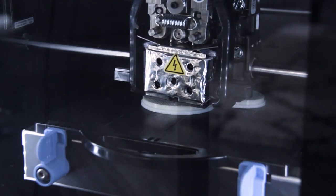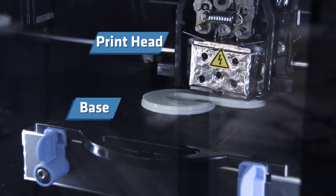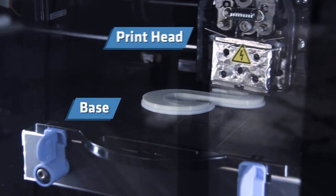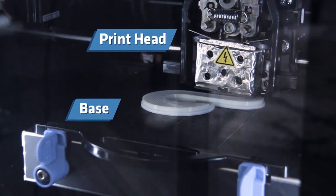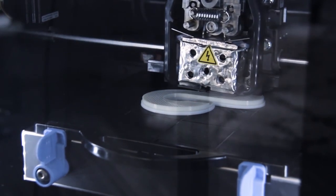Most printers have two major parts, the base and the printhead. The base can move up and down, and the printhead can move left, right, forward, and back. There are of course exceptions to this, but most printers work like this.